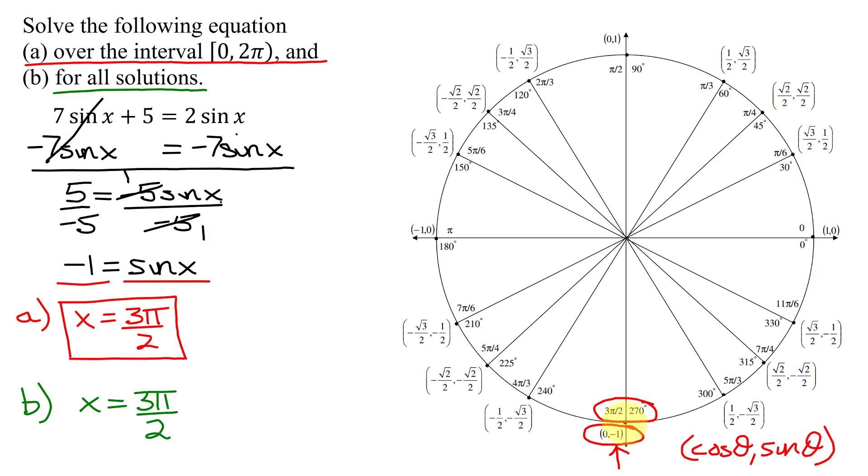So I'm going to add 2π times, pick your variable that you like. I like n, but you must state where n is an element of the integers. And that is the way that we represent every single angle that is coterminal with this angle.